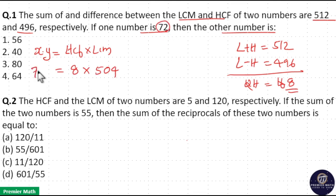One number is 72, so 72 times y. 8 goes 9 times in 72. 9 goes 5 times in 45, remaining 5. 9 goes 6 times in 54. So option 1 is your answer. The other number is 56.